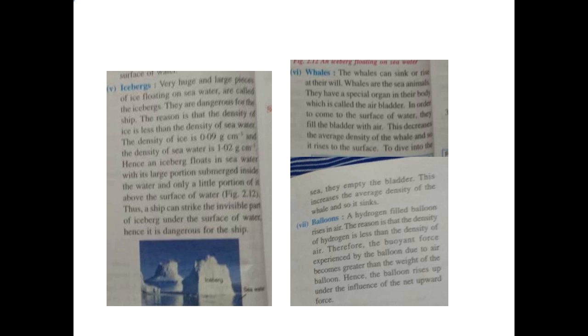Now the next application is about whales and balloons. Whales can sink or rise at will — they have a special organ in their body called the air bladder, which works just like a submarine's blast tank. To come to the surface, they fill the bladder with air, which decreases the average density of the whale, so it rises. To dive, they empty the bladder, which increases the average density, so it sinks. The functioning is actually opposite to a submarine: a whale fills its bladder with air to reduce density, while a submarine fills its blast tank with water to increase density.